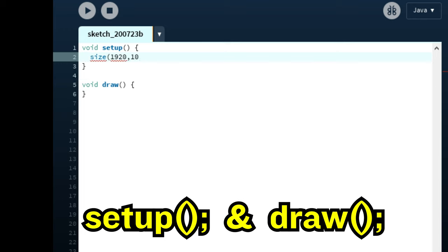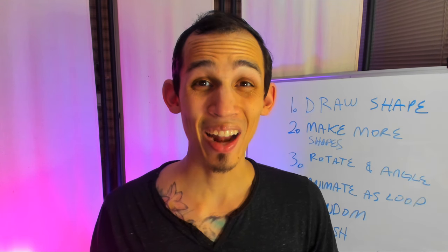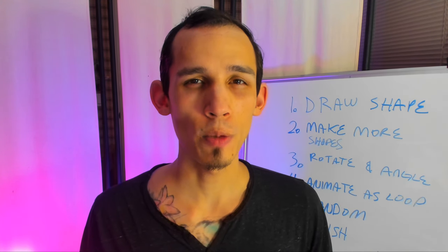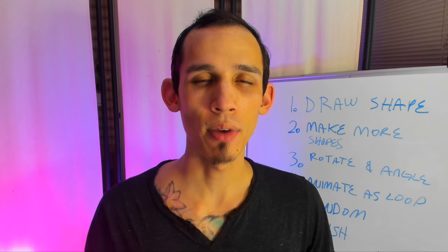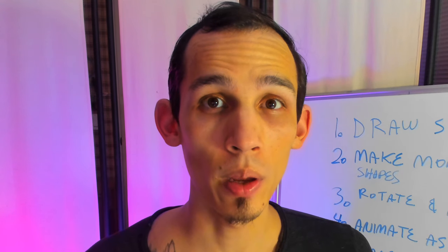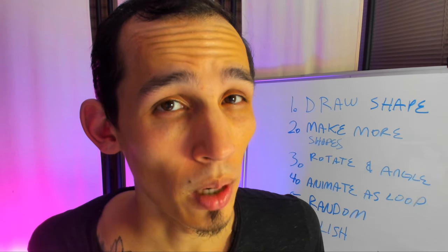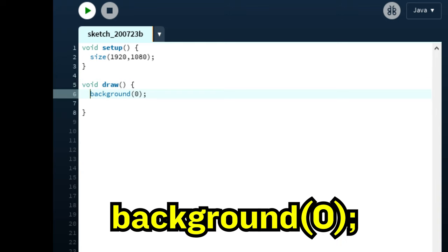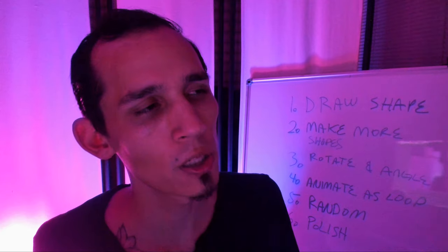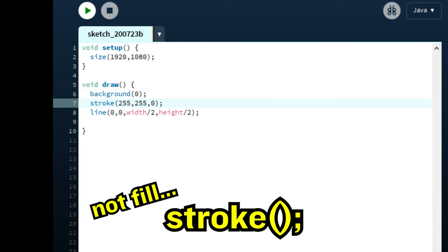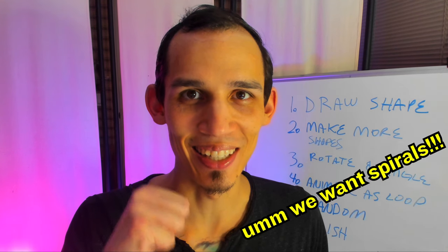First we want to add our setup and draw. Now we're going to add a shape. When you first look at a spiral, you might think it has to have a ton of code, but we're going to go with a line. So we're going to draw a black background for some dark mode feels. Now let's draw our line — we have black on black, so we need to add a fill. Yes, we have a line.